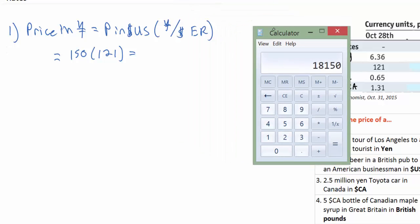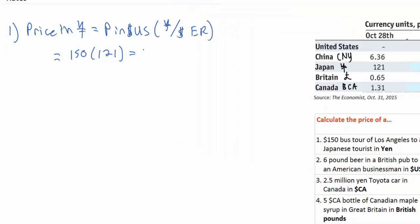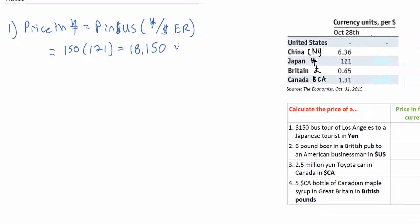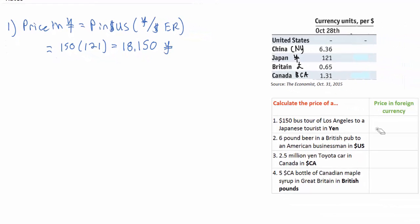We'll put that into our answer. So the price of the $150 bus tour to a Japanese tourist equals 18,150 yen. We found this by multiplying the dollar price by the yen exchange rate.